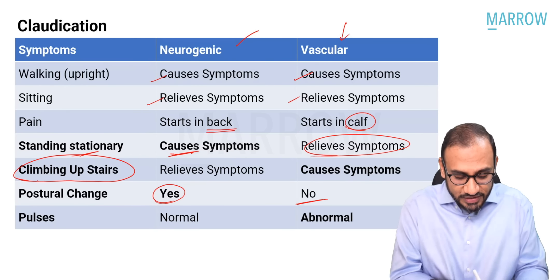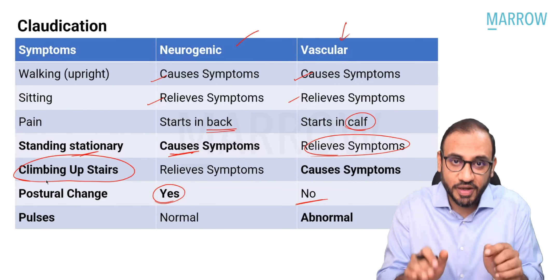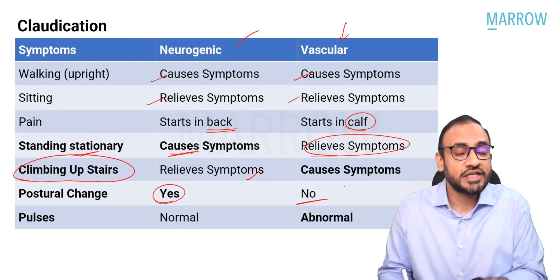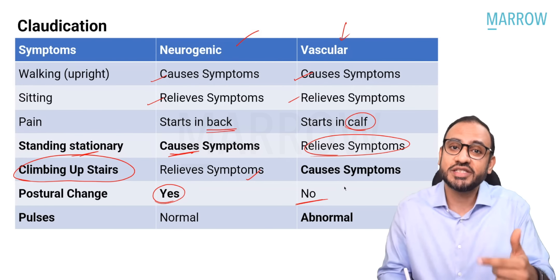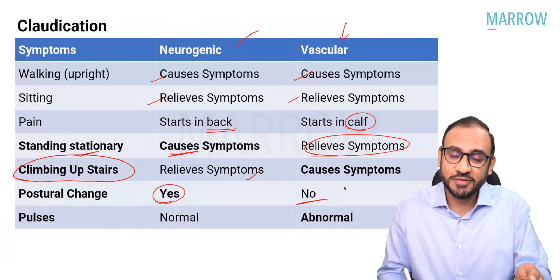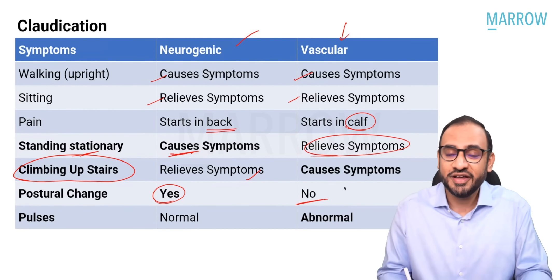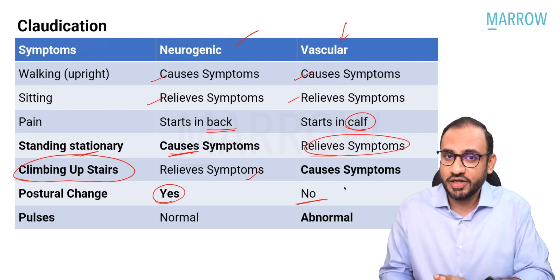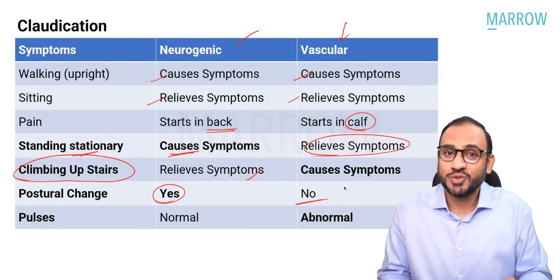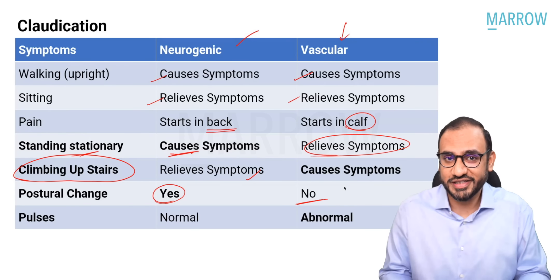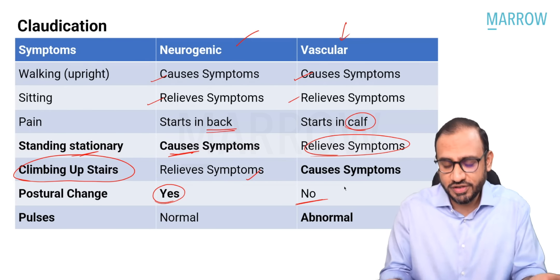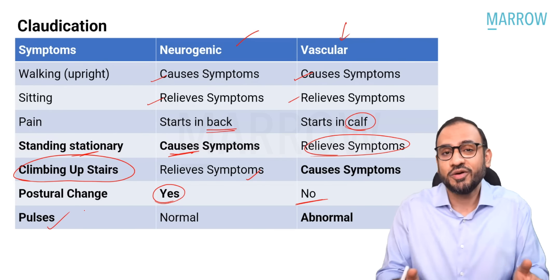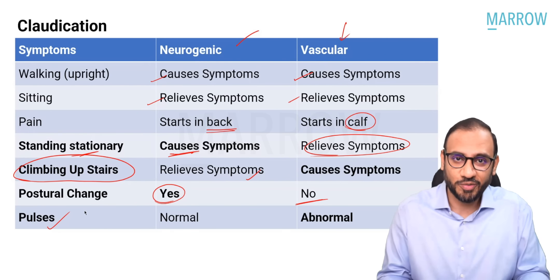Regarding climbing up the stairs: in neurogenic claudication, since you flex the spine while climbing, the pain decreases. In vascular claudication, there is still pain because muscles are still active and demanding oxygen. Any kind of activity causes pain in vascular claudication, but flexion activity does not cause pain in neurogenic claudication. In vascular claudication, the patient will also have abnormality in pulses because it is a vascular problem.